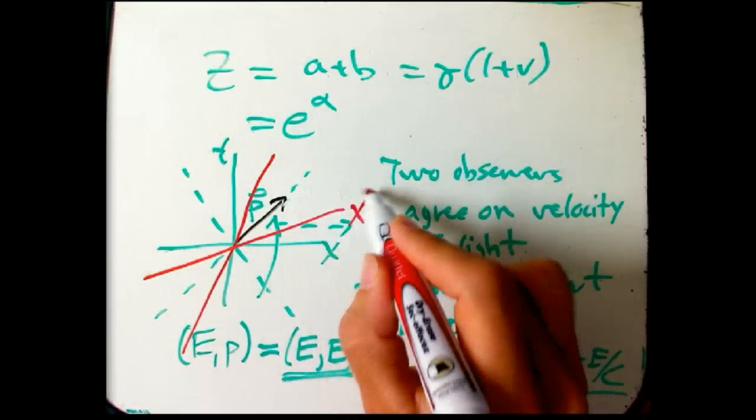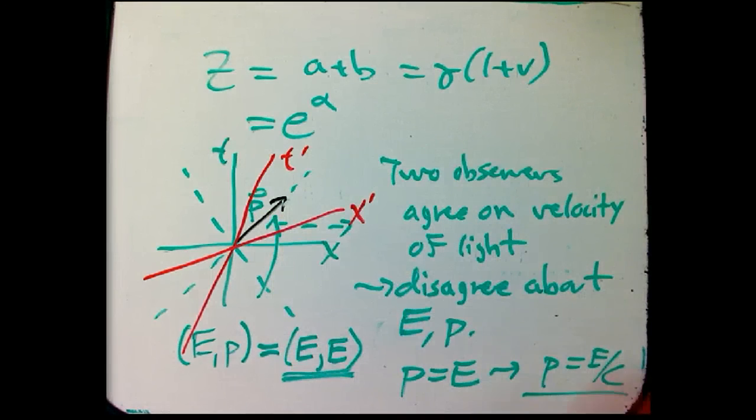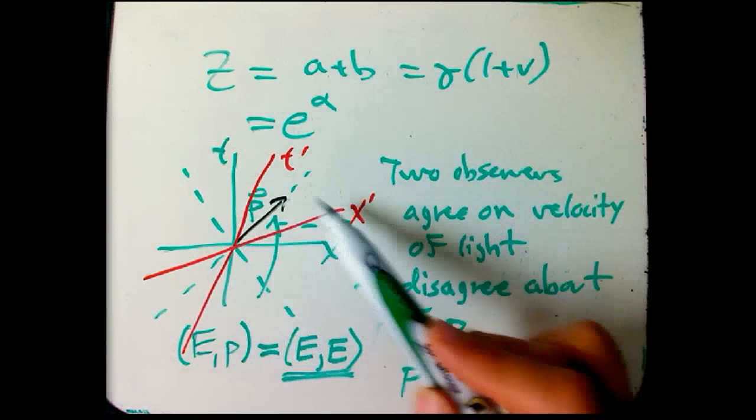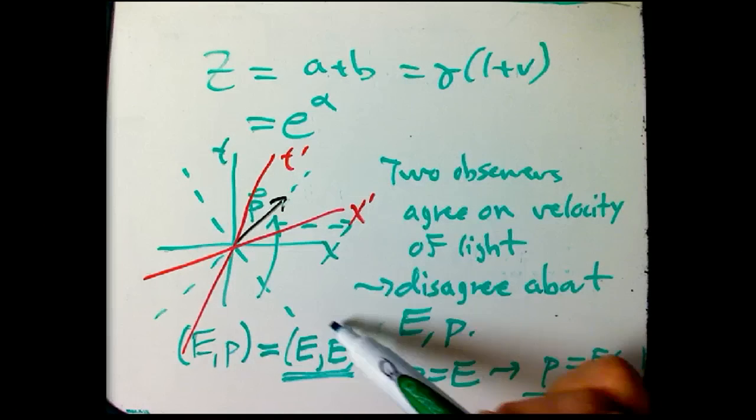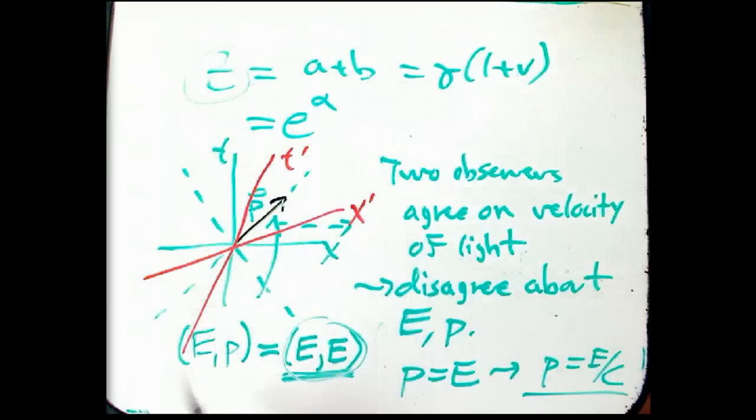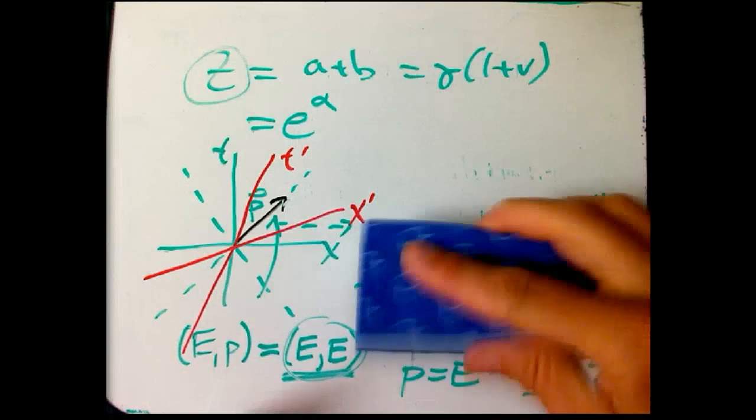Well, what about in the X prime, T prime coordinate system? Well, that's exactly what we were just doing. We were analyzing what happens when we take X prime, T prime, and look at this kind of vector, and we discovered that it just gets multiplied by Z. Okay, let's just redo that real quick. Remember how that worked?